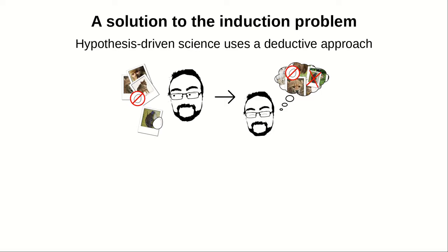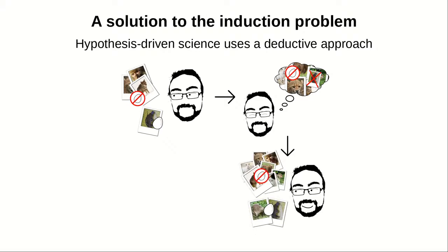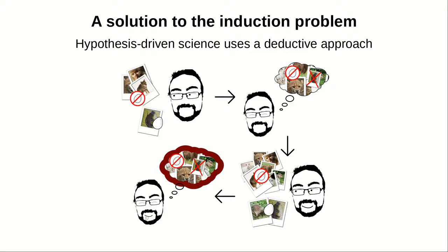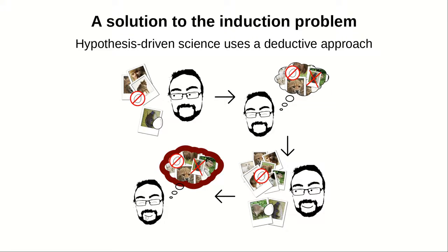Now you go into the wild, you sample more mammals that do not lay eggs, and then you find another monotreme, they call echidna, that do lay eggs. So your hypothesis is now supported. And that's how science works. Important - in science, we need hypotheses.